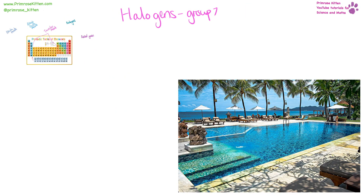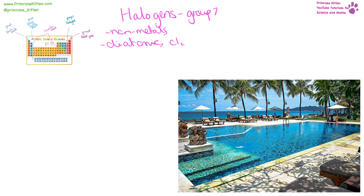Moving over one group to group seven, we have the halogens. We are still in the non-metals. These are going to go around as diatomic molecules, which means their formula is going to be — for chlorine gas, Cl2; fluorine gas, F2; bromine gas, Br2. They go around together in pairs.